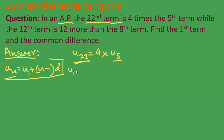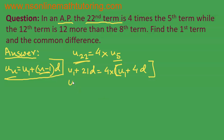So u1 plus 22 minus 1, because it is n minus 1, so 22 minus 1 is 21 times d, is equal to 4 times u1 plus 5 minus 1, that is 4, times d. Which gives us u1 plus 21d is equal to 4 times u1 plus 16d.